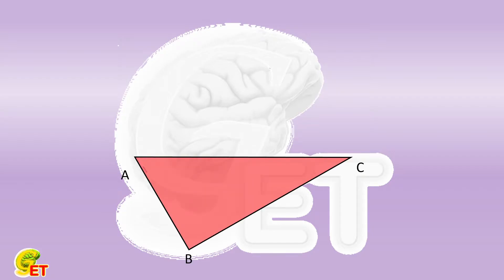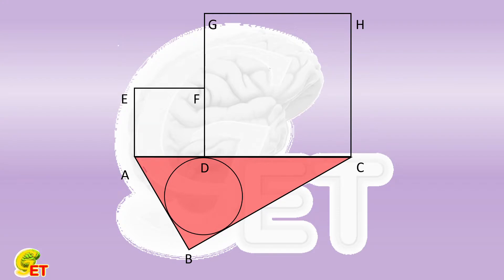We have a right triangle ABC. Its inscribed circle is tangent to the hypotenuse AC at point D. Next to the triangle, we use the lengths of ED and CD as the side lengths to plot two squares AEFD and DGHC.